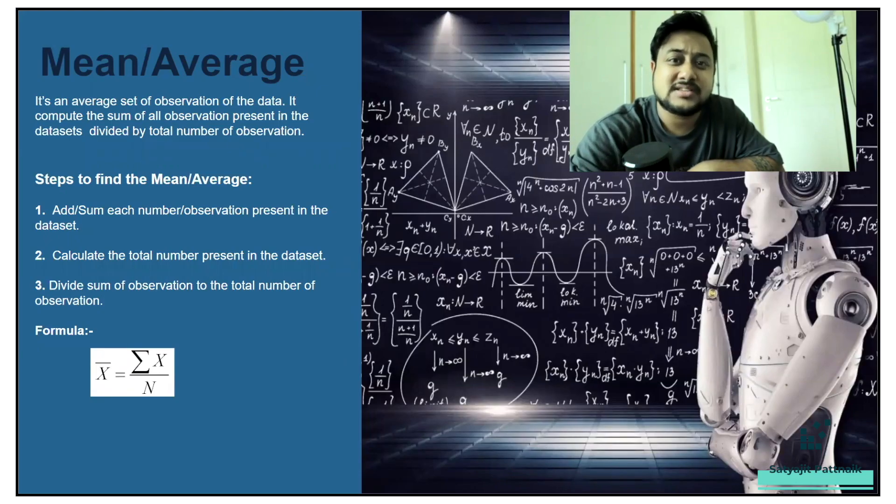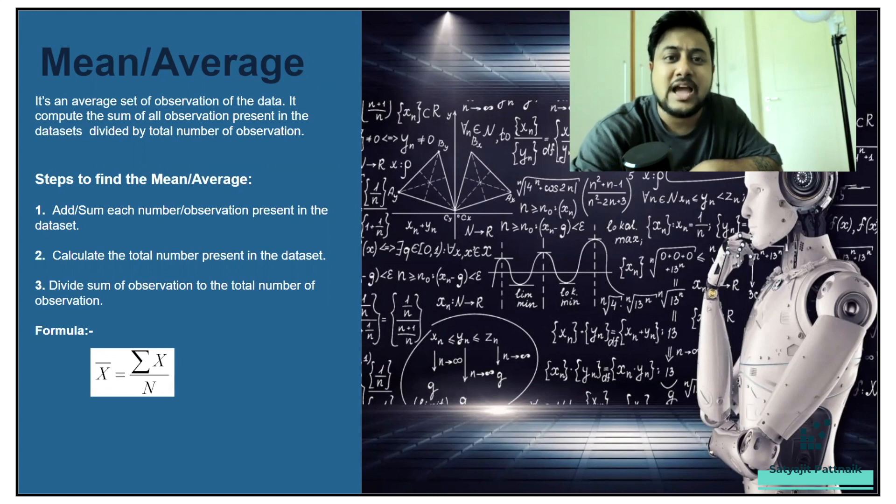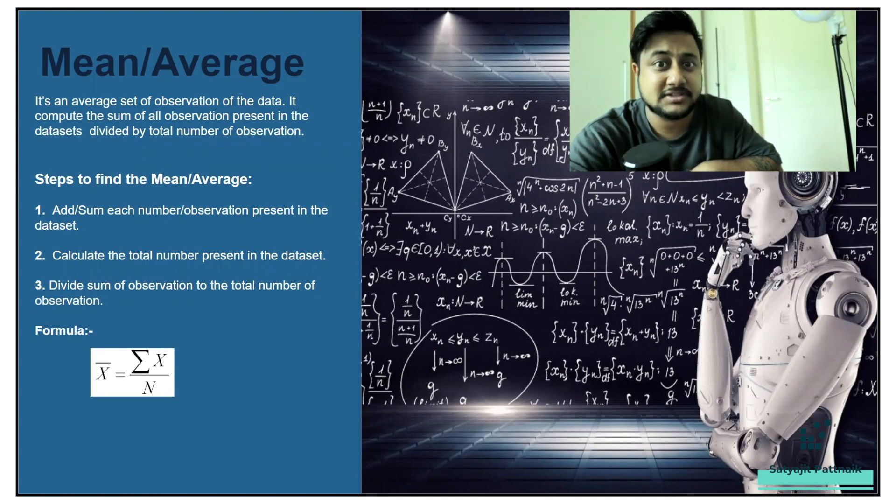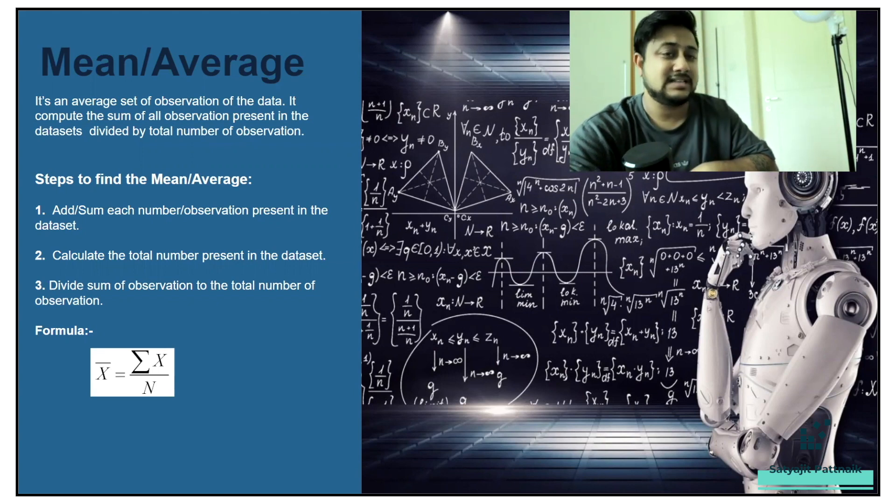Mean, which is a statistical term, the normal human language is basically average. So we tell about average, right? What is the average score of the Indian batsman? Let's say everybody score 50, 60, 50, something like that. And what is the average of it? 100 plus 60 by three, which is 53.33, right? So it's an average set of observation of the data. It computes the sum of all the observation present in the data sets divided by the total number of observations, as simple as that.